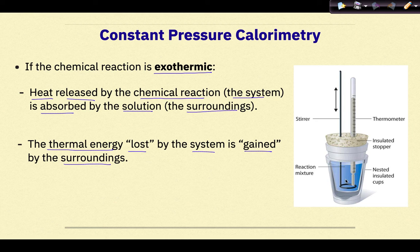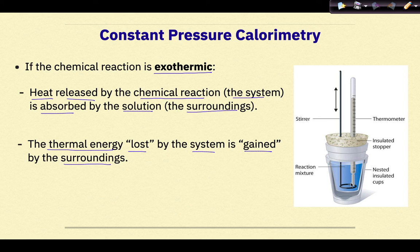We can't see the system — the system is the chemical reaction, and of course it's at the particulate level, so we can't see it. We can see the surroundings though; the surroundings is the solution. So the thermometer is measuring the temperature of the solution, and in an exothermic reaction we would see the temperature increase as measured by the thermometer.